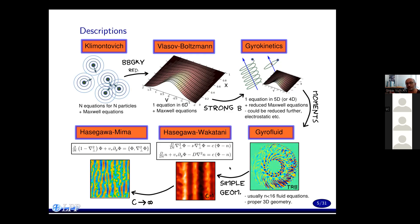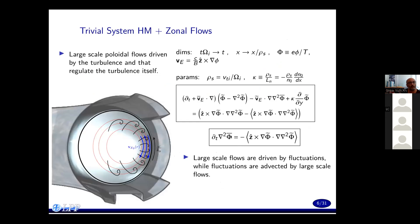One thing which is probably important is the existence of zonal flows. We can keep the zonal flow by using a proper adiabatic or non-adiabatic response in the Hasegawa-Wakatani system. The trivial system to me is Hasegawa-Mima plus zonal flows, which we understand almost profoundly — we don't understand everything, of course, but we understand much better than the other systems.